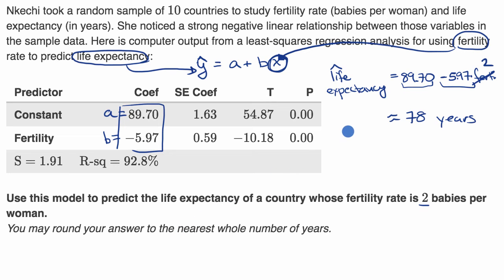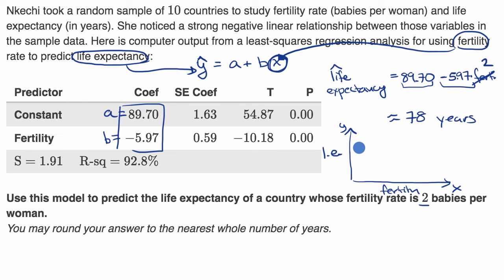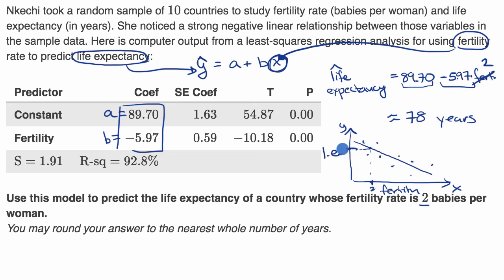Just to be clear about what happened here: Nakechi did a regression with fertility on the x-axis and life expectancy on the y-axis. She took 10 data points and fit a regression line, observing a negative linear relationship. Then, using this regression line, she estimated that for a country where fertility is 2, the estimated life expectancy would be roughly 78 years.